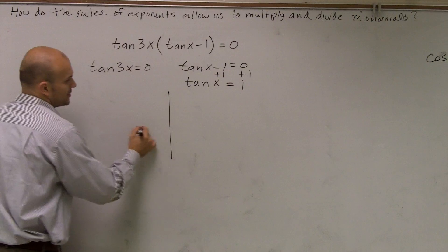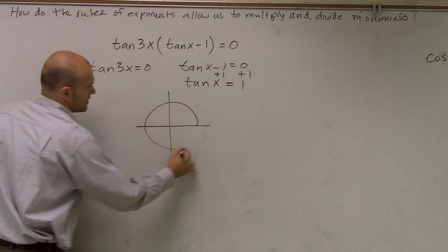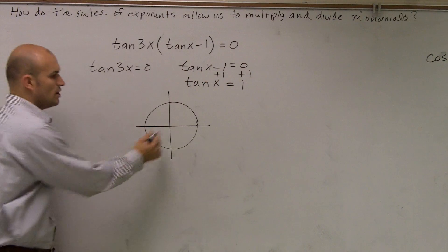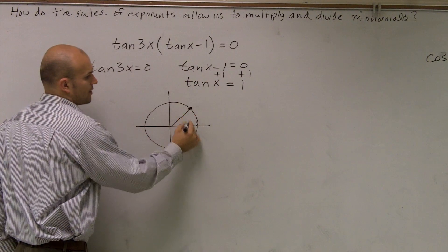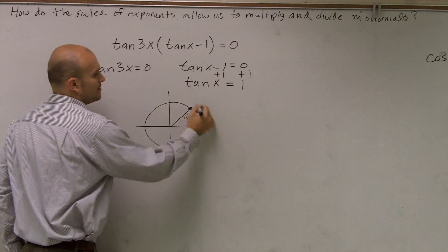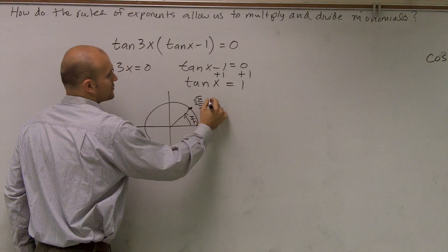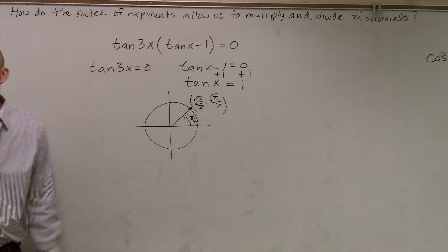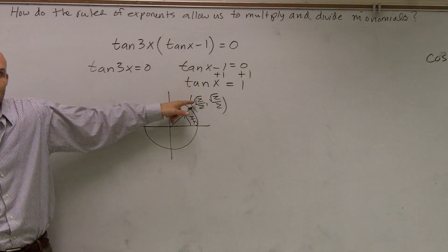So I'm going to take a look at my unit circle, and I know that for this first one, tan(x) equals 1 at π over 4. Why π over 4? Because remember, the angle at π over 4 is √2 over 2. And remember, tangent is y over x. So if I take this over that point,